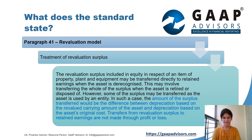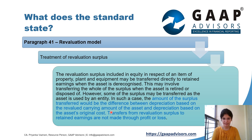Here is what paragraph 41 states: The revaluation surplus included in equity in respect of an item of property, plant and equipment may be transferred directly to retained earnings when the asset is derecognized. This may involve transferring the whole of the surplus when the asset is retired or disposed of. However, some of the surplus may be transferred as the asset is used by an entity. In such a case, the amount of the surplus transferred would be the difference between depreciation based on the revalued carrying amount of the asset and depreciation based on the asset's original cost. Transfers from revaluation surplus to retained earnings are not made through profit or loss.